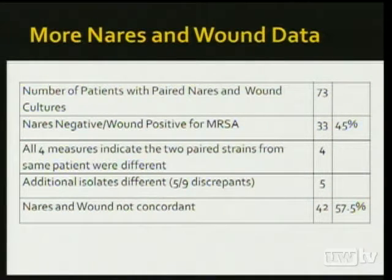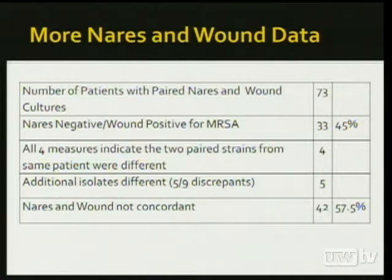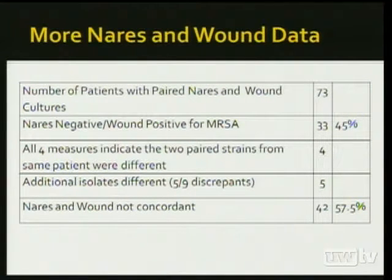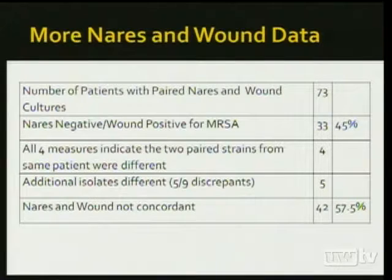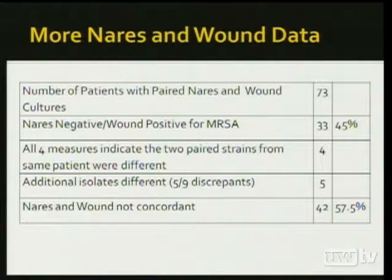Before making conclusions about nares-wound correlation, one more piece of data: we had 40 patients with both wound and nares isolates, but we also found 33 patients in the same time period who had a positive wound but a negative nares — so 45% of the time, patients with positive wounds were nares negative. Adding in the four patient pairs where all four methods agreed the strains were different, and estimating about five more discrepant pairs would resolve to 'different' using pulse field, that leaves about 42 patient pairs where nares and wound were not concordant. That's over 57%.